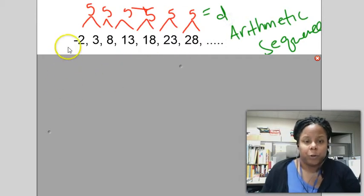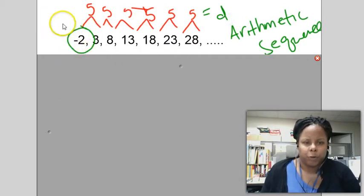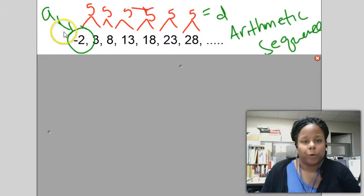The first term is negative 2, and we call the first term of the sequence the initial term, and we indicate it by the name of the letter of the sequence, let's call it A, and the subscript represents the order. This is the first one, and this is the second one, 8 is the third one, and vice versa.